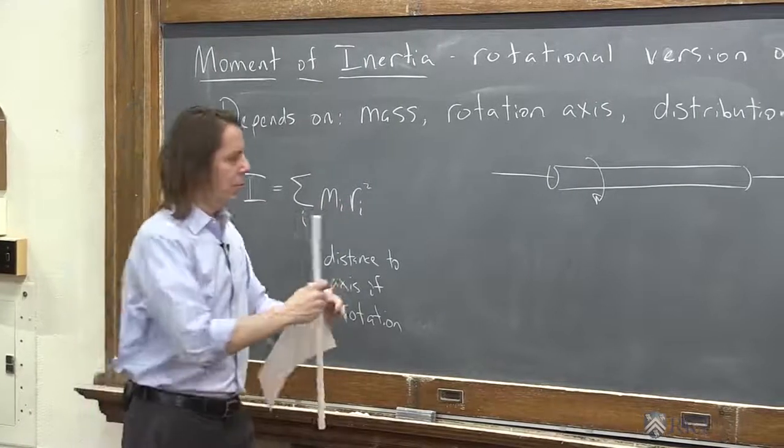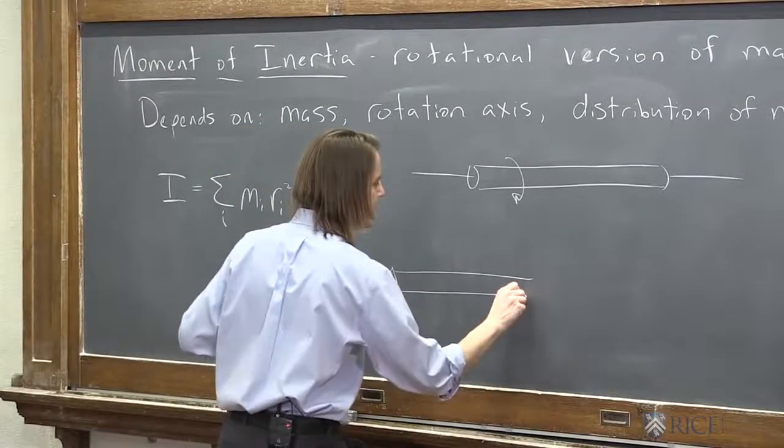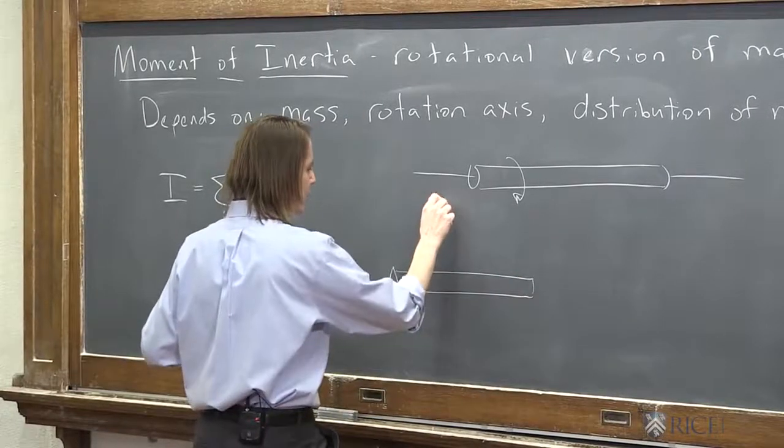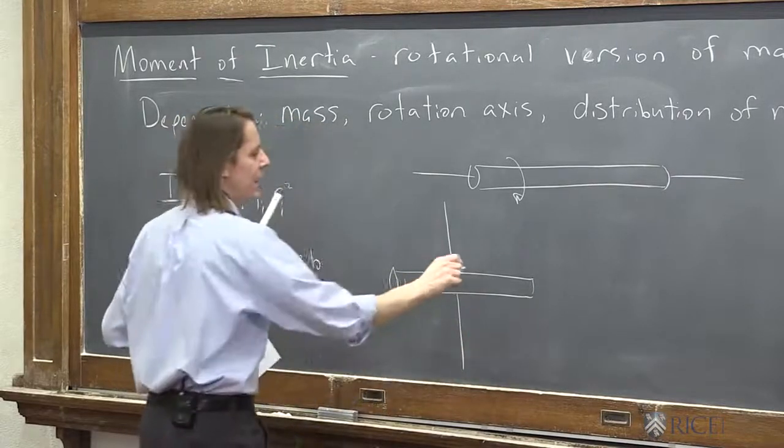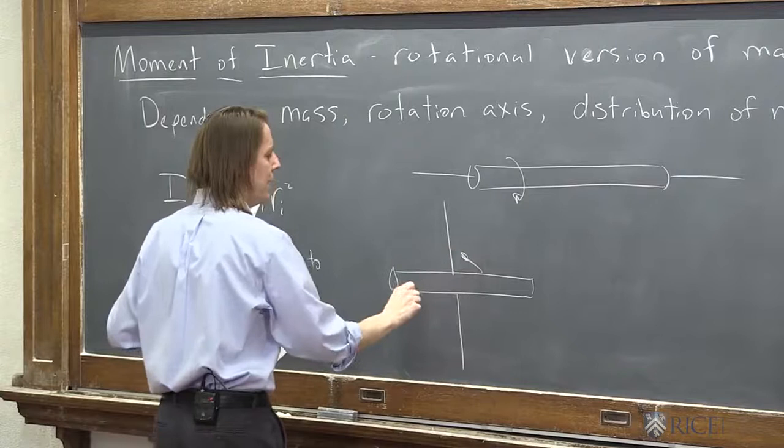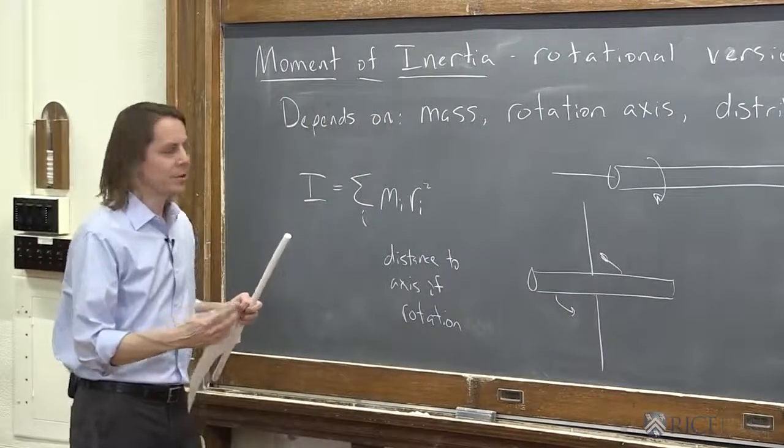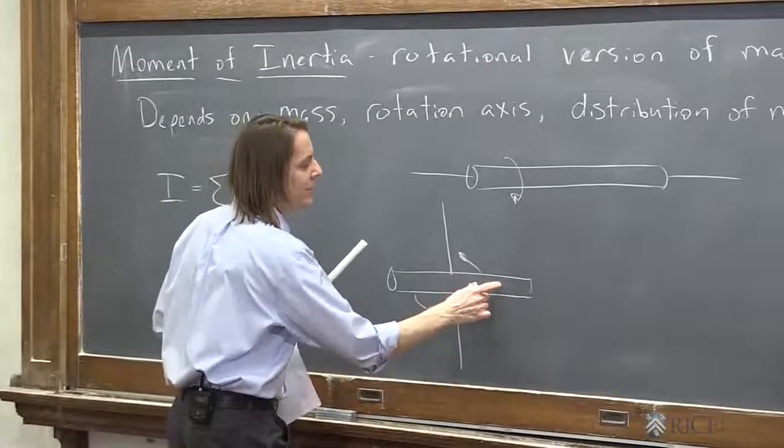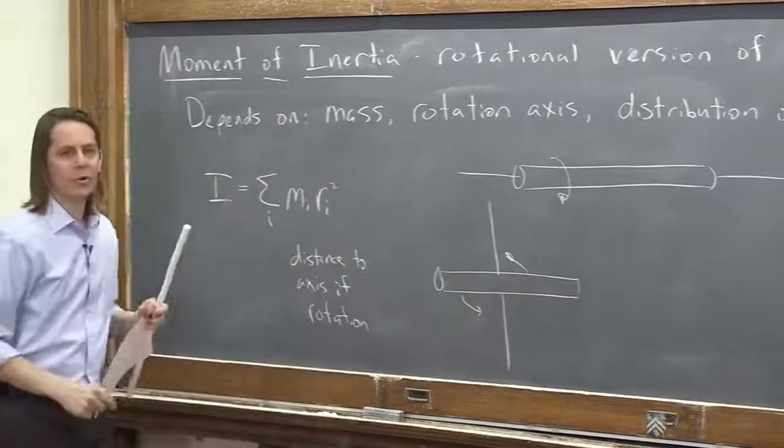Another way you could rotate it would be to say, okay, I've got the same rod here, same mass, same length, but I'm going to rotate it about this axis, like that. I'm going to have it go into the board and out of the board like that. That will actually have a bigger moment of inertia because a lot of the mass elements are very far from the axis. So therefore, those R squared terms are going to be a lot bigger.